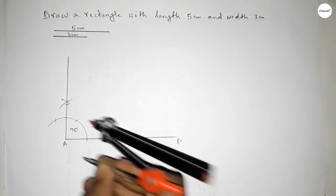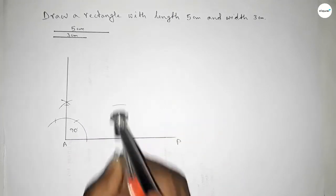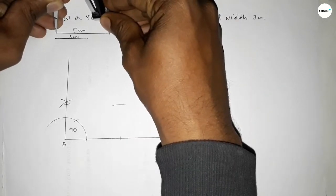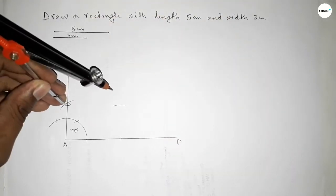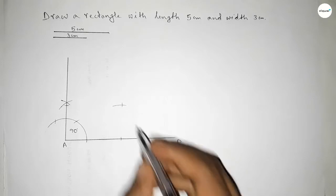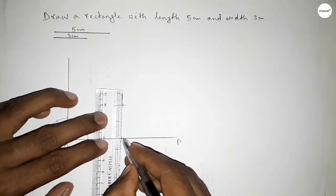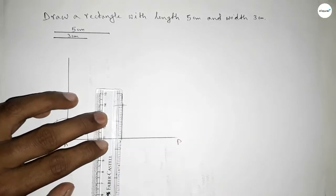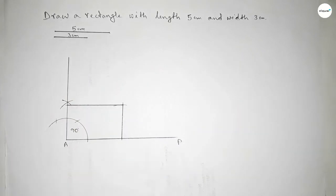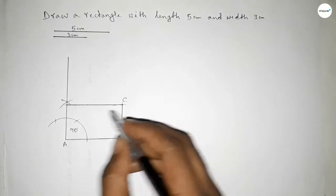With the same length, putting the compass and drawing an arc. Again taking the length 5 centimeters by using the compass and cutting here so both curves intersect at a point. Now joining this side, then joining the next side. Taking points B, C, and D.